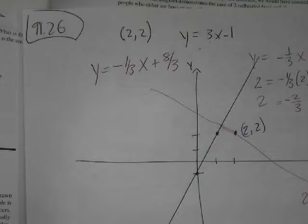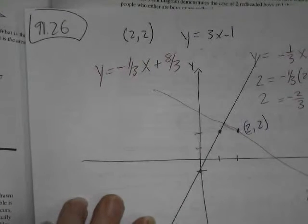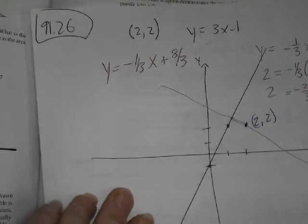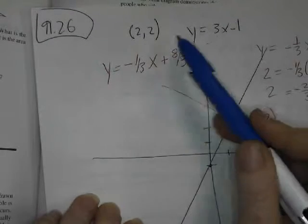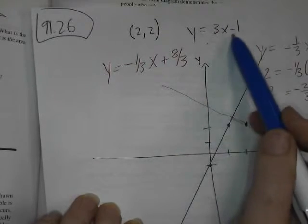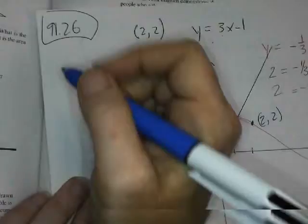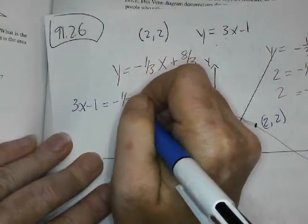I can use the equal values method, which is just a form of substitution. Since that y and that y, they're both y's, I can just substitute for that y. I can just plug in 3x minus 1 over here. So 3x minus 1 is equal to negative 1 third x plus 8 thirds. And I can solve it for x.